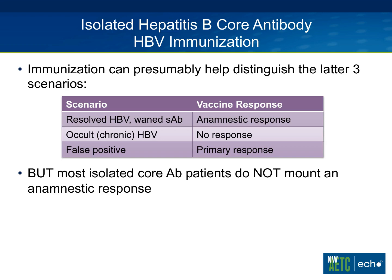Hepatitis B immunization can theoretically help distinguish these latter three more commonly encountered scenarios. Someone who has resolved hepatitis B with a waned surface antibody should theoretically mount an anamnestic response — if you give a single dose of a competent hep B vaccine and check their surface antibody in two to four weeks, they should have a titer exceeding 10 IU. This makes sense: the anamnestic response suggests immunologic memory or imprint of prior infection, and when they see viral antigen again, the seroprotective response comes roaring back.